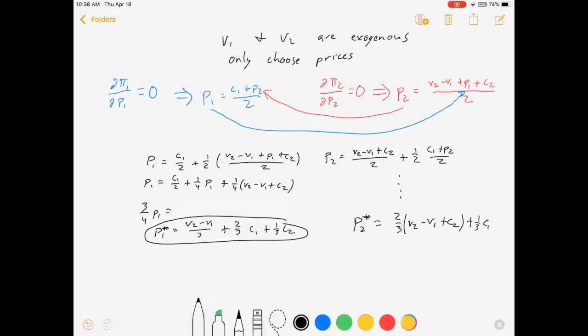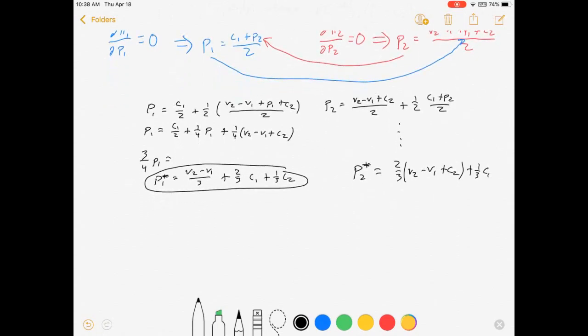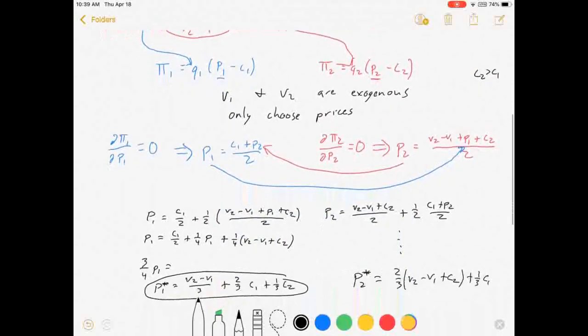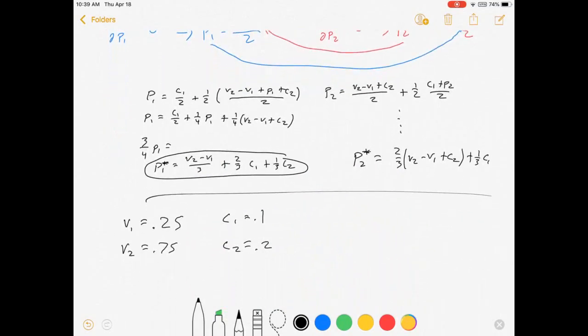So let's put a couple of numbers in this just to show you what it might look like. Say, in an example or a homework assignment or whatever, I tell you that firm 1 has a quality of 0.25. Firm 2 has a quality of 0.75. Firm 1 has a constant marginal cost of 0.1. Firm 2 has a constant marginal cost of 0.2. I showed you how to solve for all this stuff. You could do it with all the numbers plugged in for your v's and your c's, or you can just use the equations I already gave you. So I'll leave that to you. I just wanted to give you some numbers, and I'll throw some answers at you.